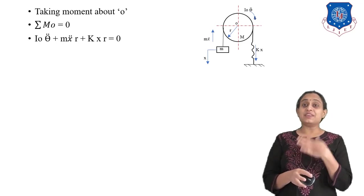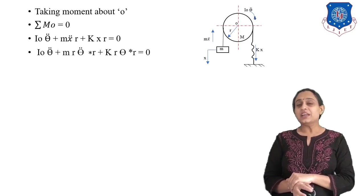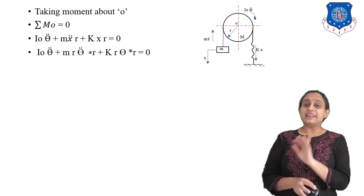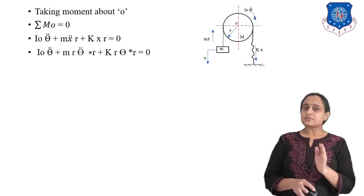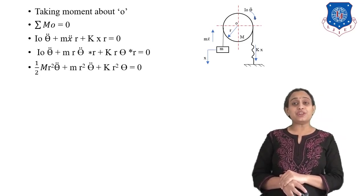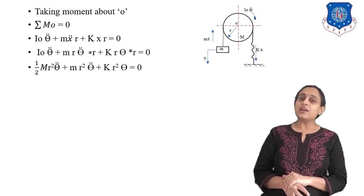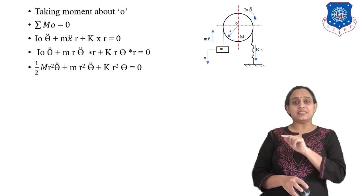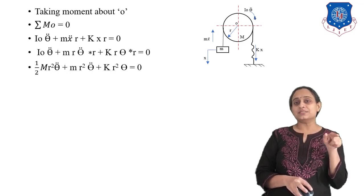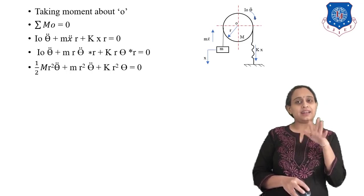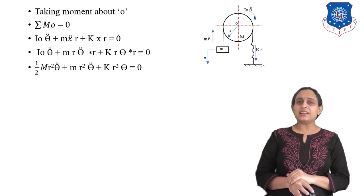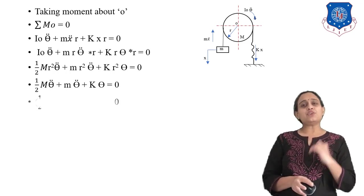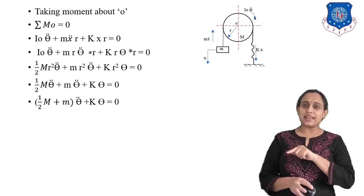Substituting X = R·θ and Ẍ = R·θ̈, we get I₀·θ̈ + M·R²·θ̈ + K·R²·θ = 0. The mass moment of inertia of the pulley is I₀ = ½·M·R², so the equation becomes (½M·R²)·θ̈ + M·R²·θ̈ + K·R²·θ = 0. Since R² is common throughout, it cancels out, giving (½M + m)·θ̈ + K·θ = 0.